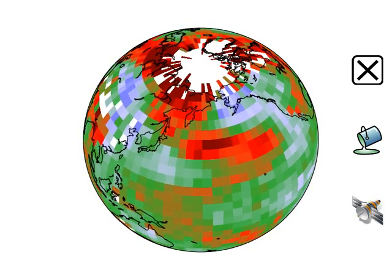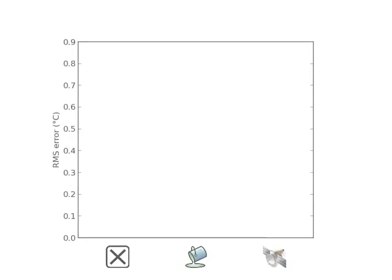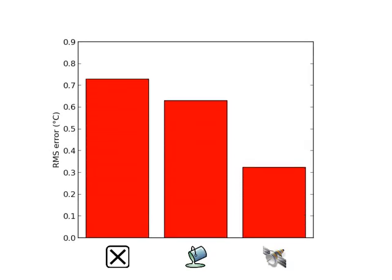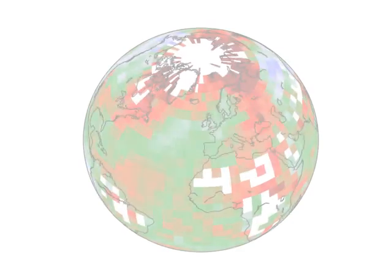Over a range of tests, both the infilled and hybrid methods each give better results than ignoring the missing regions. While infilling works well over the oceans, the hybrid method performs particularly well at restoring temperatures in the vicinity of the unobserved regions.